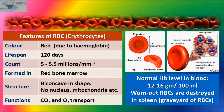Features of RBC: lifespan is 100 to 120 days; worn-out RBCs are destroyed in the spleen and liver by phagocytosis. RBCs are red in color due to the presence of hemoglobin. They are formed in red bone marrow. The structure is biconcave, with no nucleus and no mitochondria. Their function is transport of oxygen and carbon dioxide. Normal hemoglobin level in blood is about 12 to 16 grams per 100 ml.